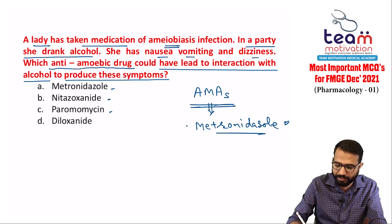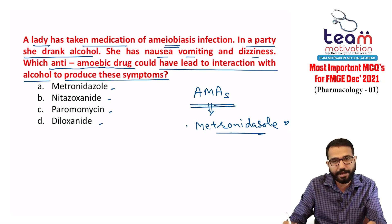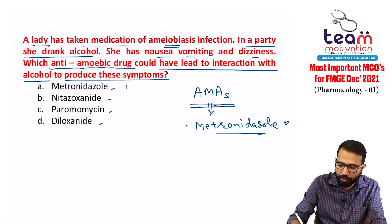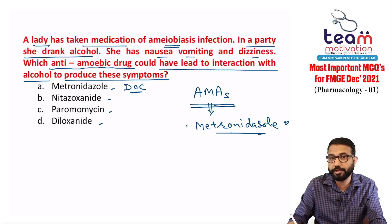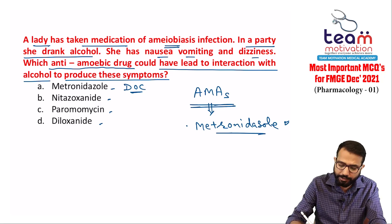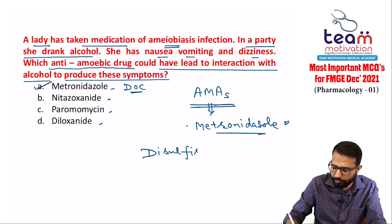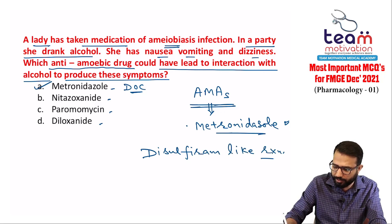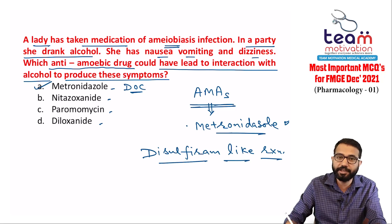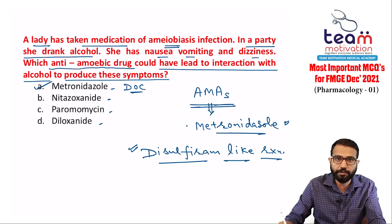Paromomycin and diloxanide are also used for intestinal amoebiasis, but metronidazole covers both intestinal and extra-intestinal forms, making it the overall drug of choice for protozoal infections like amoebiasis. Metronidazole also causes interaction with alcohol called the disulfiram-like reaction. It is not every patient who experiences this.